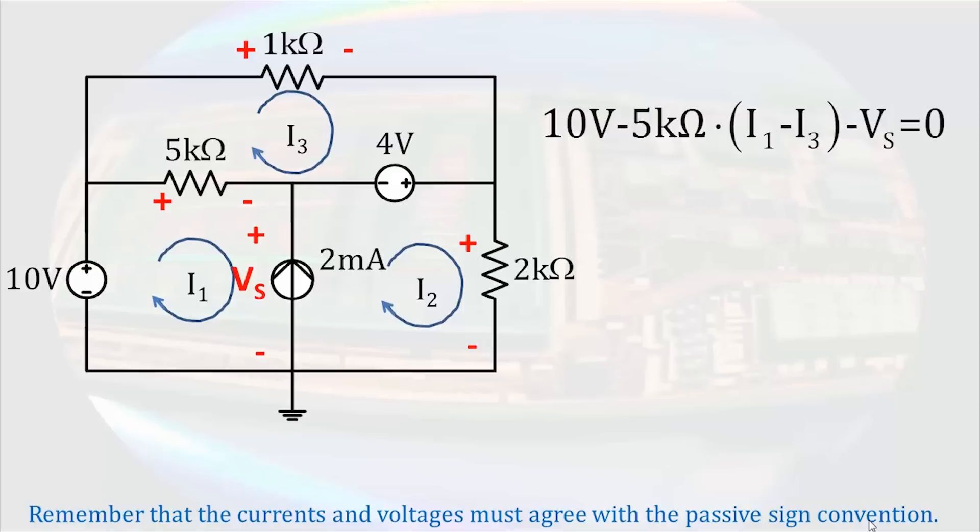The second loop, beginning in the lower left-hand corner, gives us a rise of the current source's voltage, an increase of 4 volts, and a drop of 2 kilo ohms times the current I2.